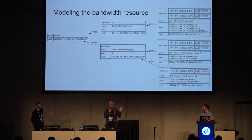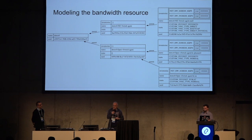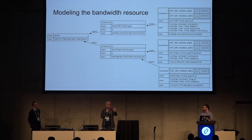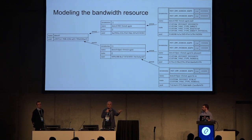But what happens if Nova schedules a large number of instances in that compute host and oversubscribes the capability of the physical NICs? Then we've made a promise with the minimum bandwidth QoS rule that we cannot deliver, because Nova doesn't have any knowledge of the promises we made to the user through the quality of service. So what we're doing is having Nova and Neutron cooperate using the Placement API: Neutron creates trees of resource providers in Placement so that when Nova schedules an instance, it takes into consideration the minimum bandwidth promises made to the ports of that instance.